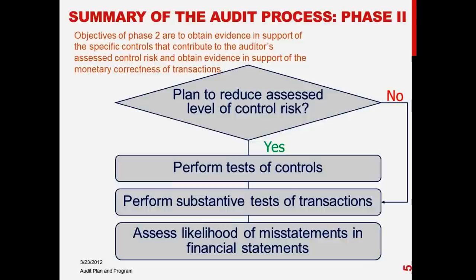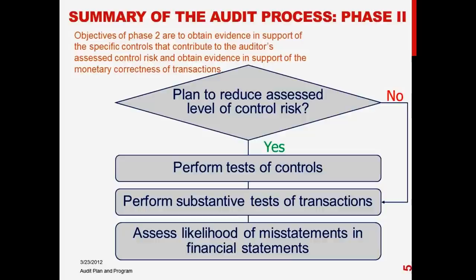You then assess the likelihood of misstatements in the financial statements based on the results of your testing of controls and substantive test of transactions. If you can't rely on internal controls — control risk is assessed as high, meaning internal controls are not effective — you're not going to test them. Instead, you increase your substantive testing, looking at a lot more documentation over the various transactions that occurred.